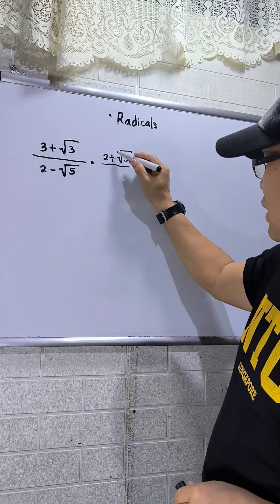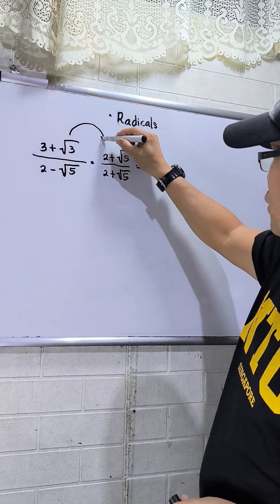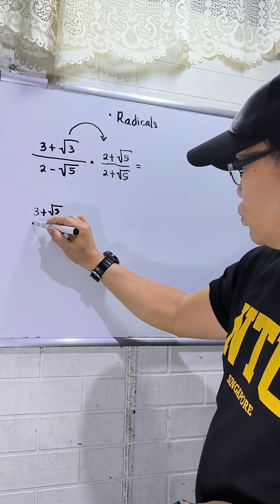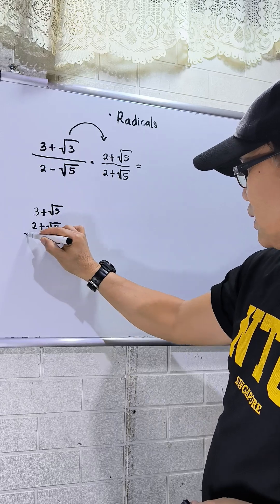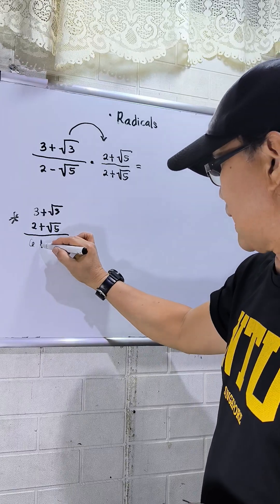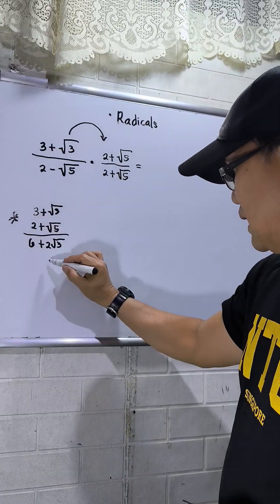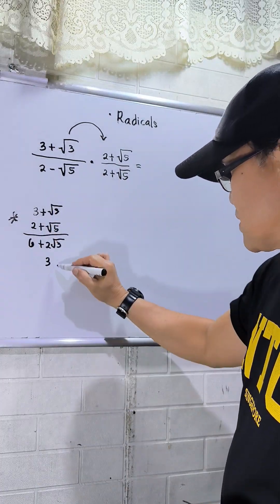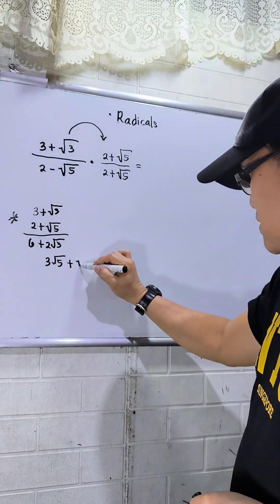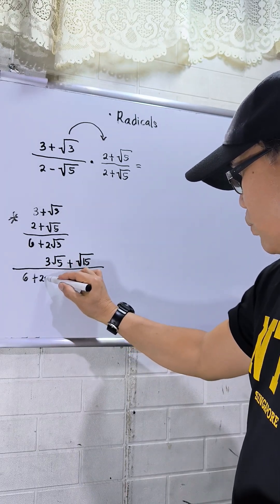Whatever we multiply in the numerator, we do the same in the denominator. So multiply the numerator: three square root of three times two plus square root of five. Note that this is multiplication. Three times two is six, then plus two square root of three, then plus three square root of five, then plus square root of fifteen.